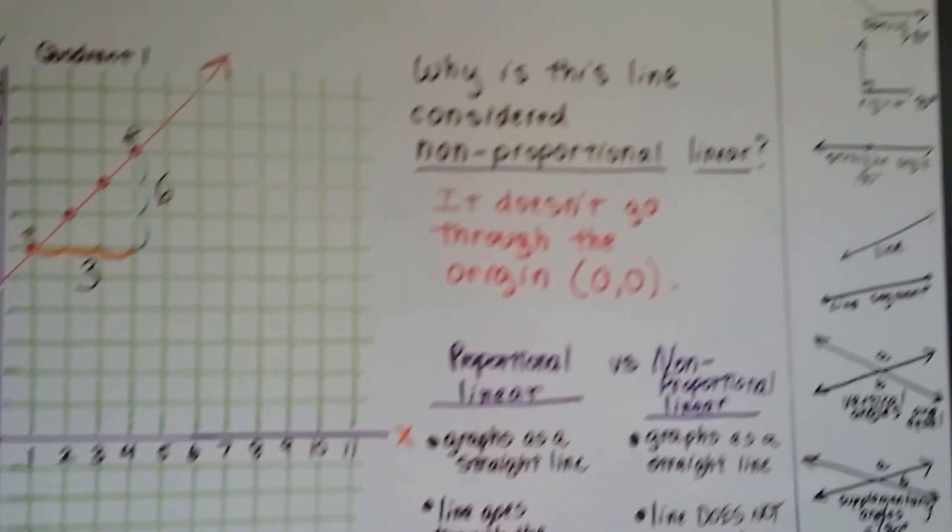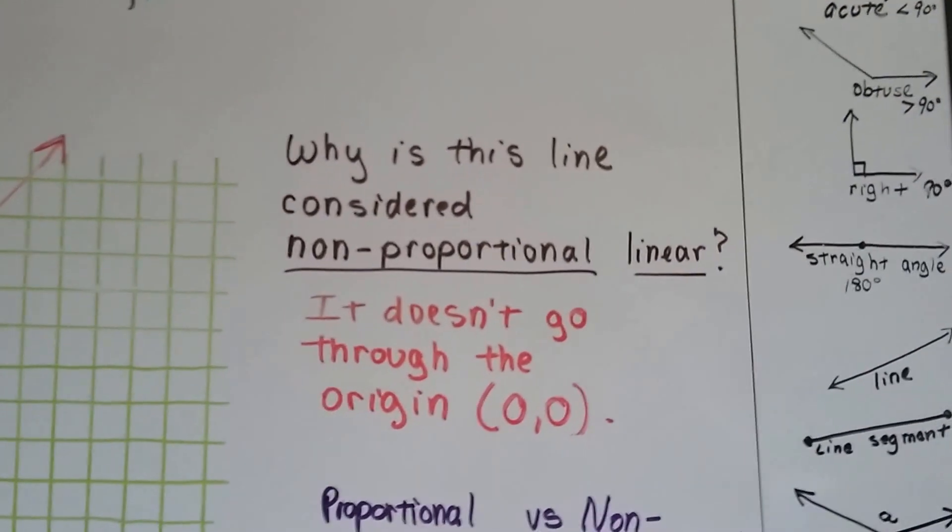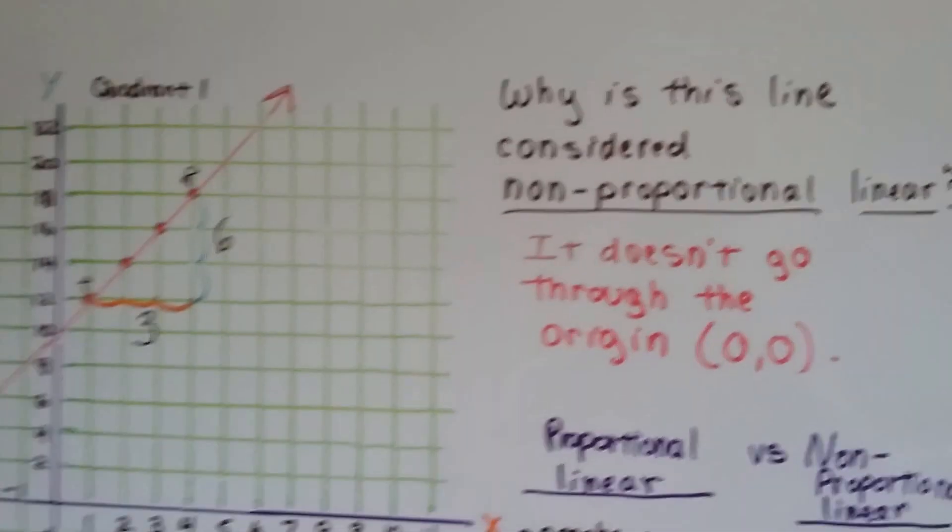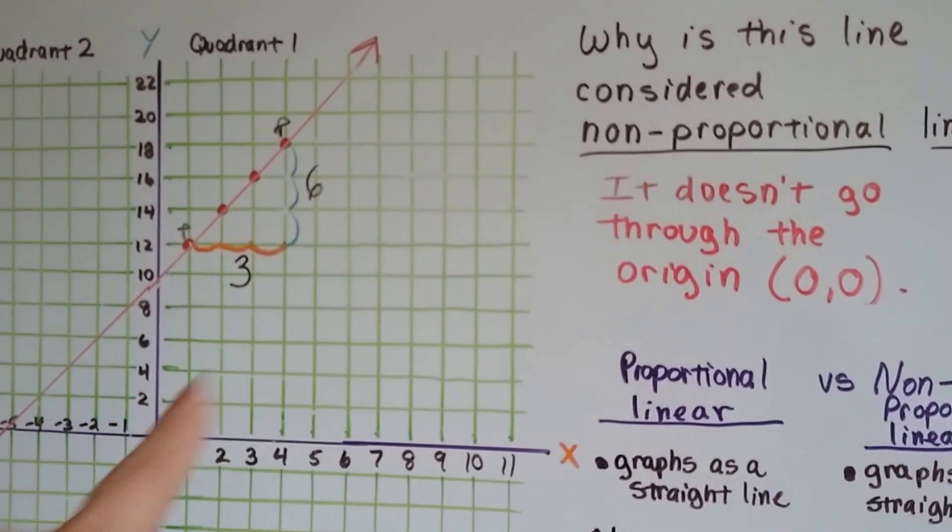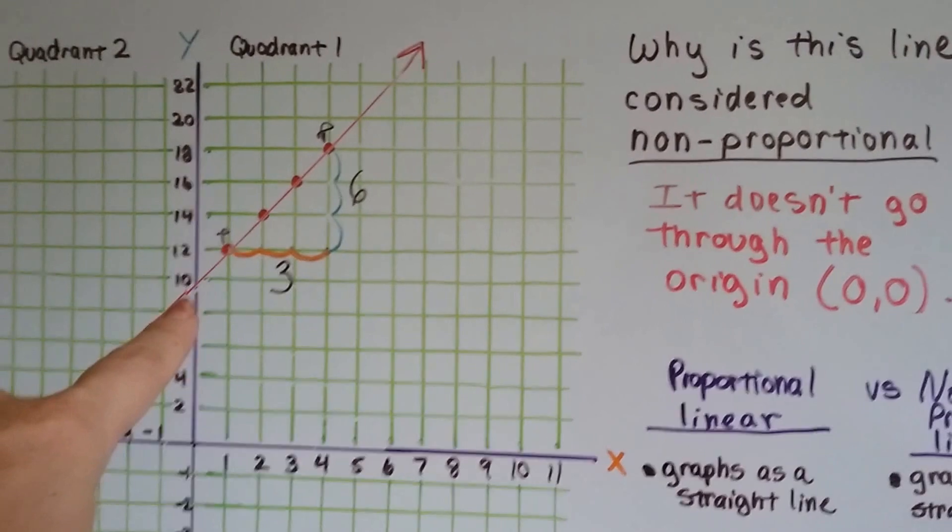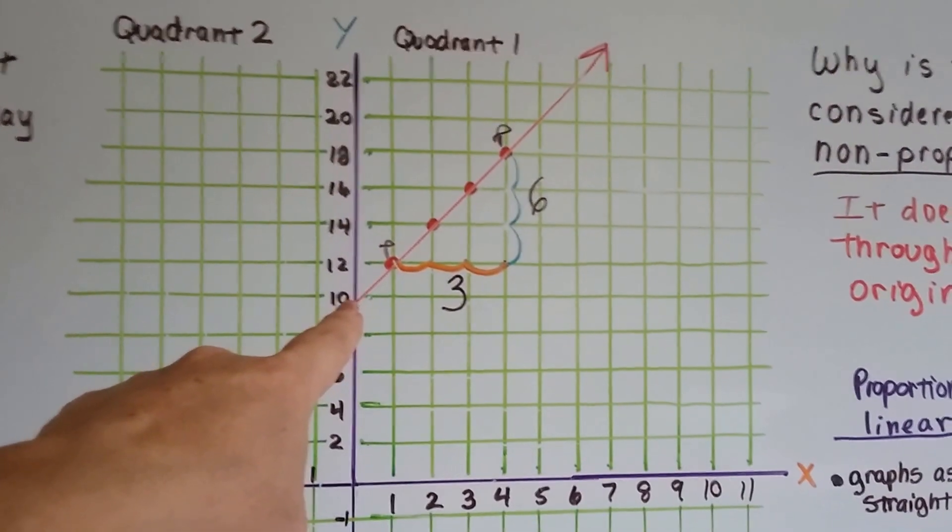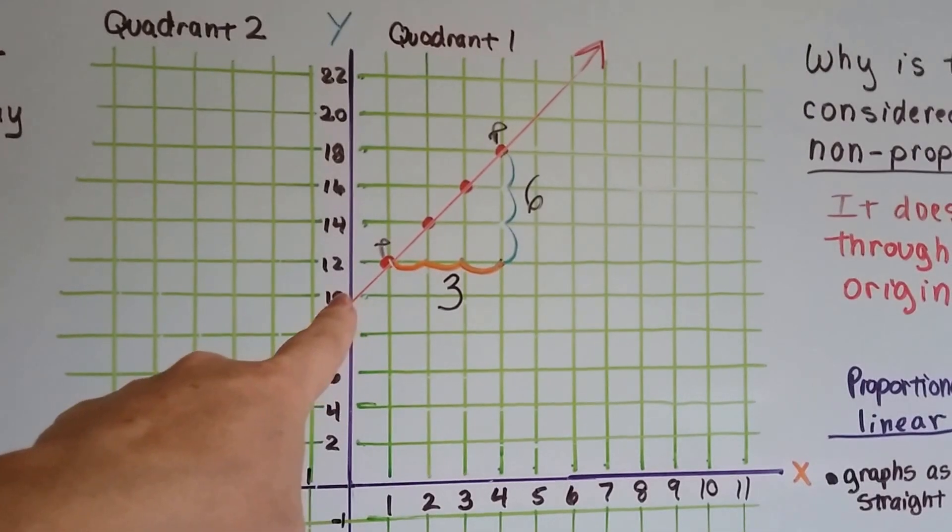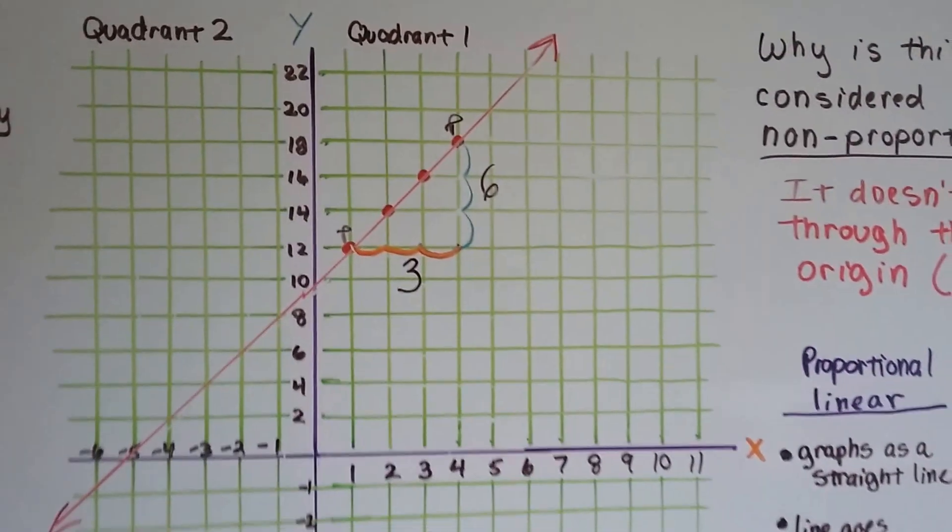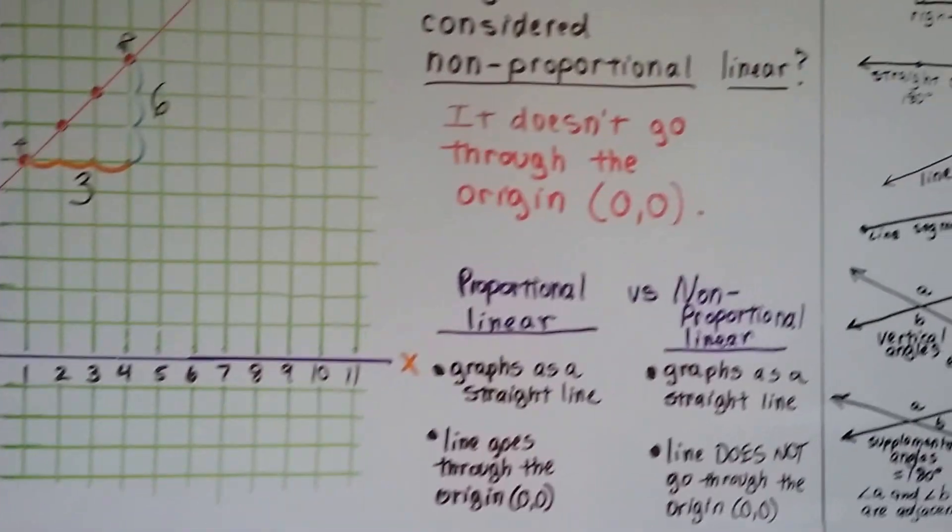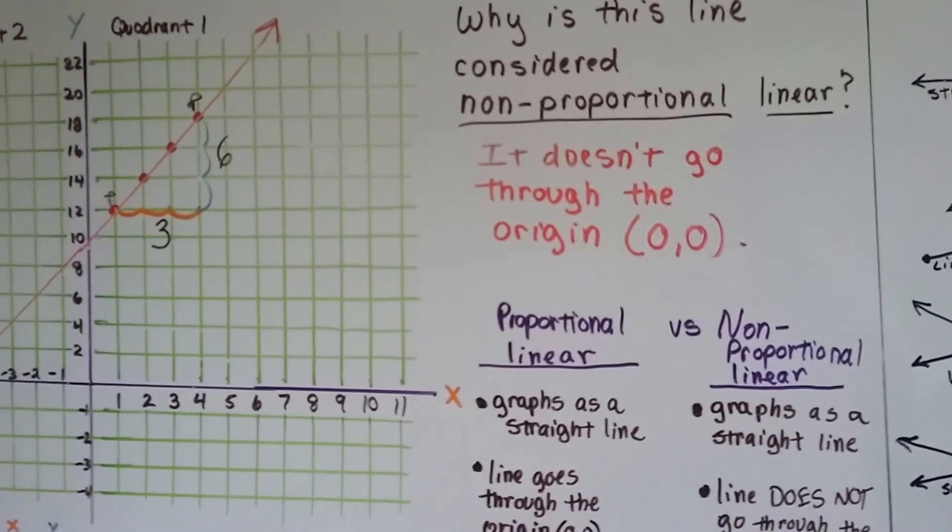Now, why is this considered non-proportional linear? Well, it doesn't go through the origin. In the last unit, all of our lines went through 0, 0, didn't they? And this one doesn't. It's hitting the y line right here at the 10. That's the y-intercept. It intercepts it right there at the 10. So it doesn't go through the origin 0, 0, so that makes it non-proportional.